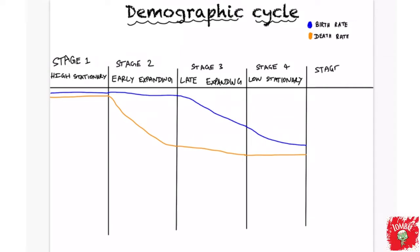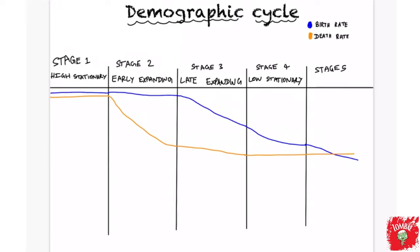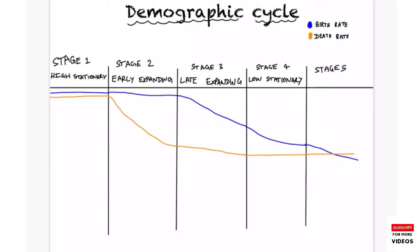The last stage is stage five. Here, the birth rate declines even further and reaches a value lower than the death rate. The blue curve representing birth rate goes below the orange curve representing death rate. This stage is called the declining phase.